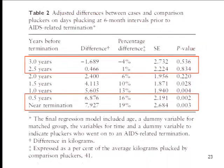In addition to the figure, they actually create a table where they regress productivity on individual characteristics as well as an indicator variable — a dummy variable for AIDS, for eventually dying of what they call AIDS-related termination. You can see three years, two and a half years, and even two years before, the difference in productivity between these two groups is only a few percent — one way or the other. They look very similar.